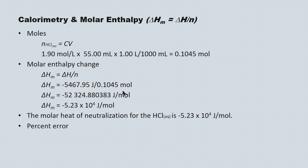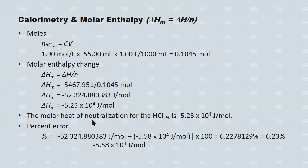The question also called for a percent error calculation. Using the raw experimental value minus the theoretically accepted value of negative 5.58 times 10 to the 4, divided by the theoretical value, we get a percent error of 6.23 percent. Sources of error include gas escaping from this system carrying energy with it, and also heating the styrofoam cup to some degree.